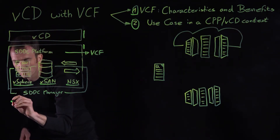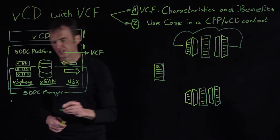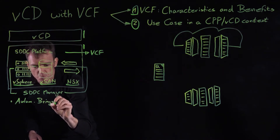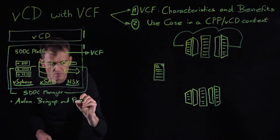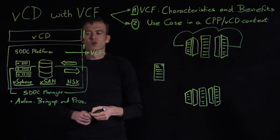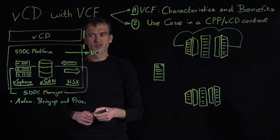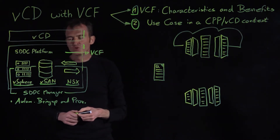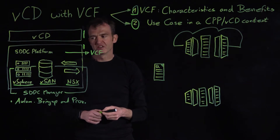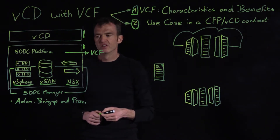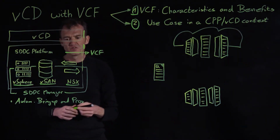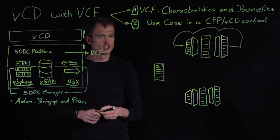First, we have a feature called automated bring-up and resource provisioning. This means that literally everything of your SDDC platform is automated, installed, and configured in a fully automated way. For example, you do not have to take care of deploying a vCenter Server, sizing it, installing ESXi hosts, or installing and configuring a vSAN datastore, NSX components, NSX Managers, or NSX Controllers — the SDDC Manager handles all of it in an automated way.